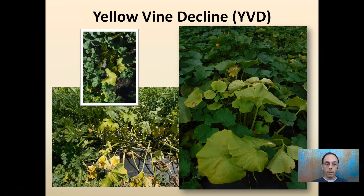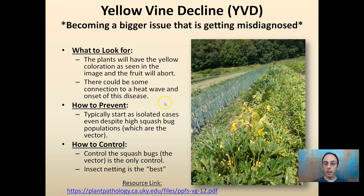Yellow vine decline, or OIVD — it's just kind of a yellowing to the leaves, not necessarily the vines that yellow, which makes it misleading. We get this limey green appearance, and it can start as a single plant and spread to others. It's becoming a bigger issue that is getting misdiagnosed. It tends to be more common in southern New England at times of high heat, and is getting misdiagnosed as heat stress because it causes fruit — in this case squash — to abort. However, yellow vine decline is more serious because those plants will continue to abort even after temperatures cool down after a heat wave. There's really nothing you can do because it is a bacteria — you have to control squash bugs, which are the vector. Insect netting would be the best option.